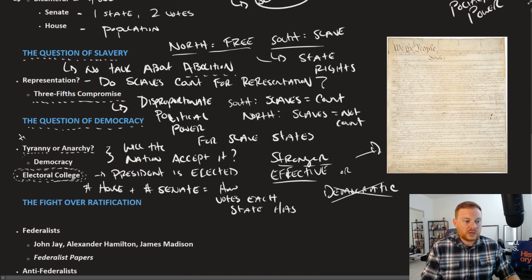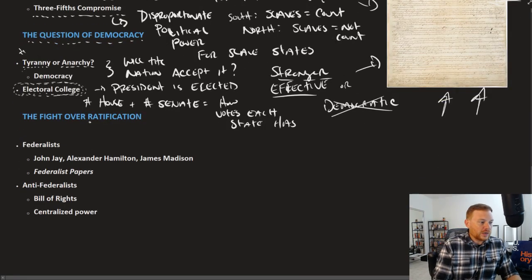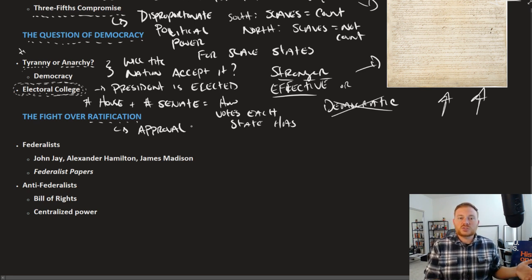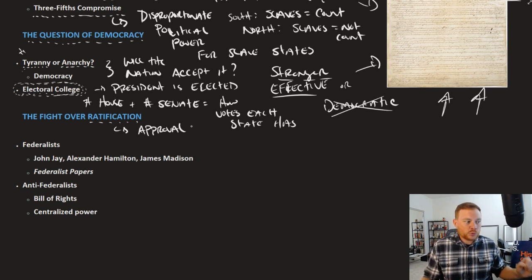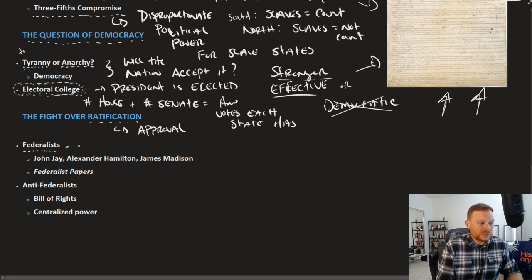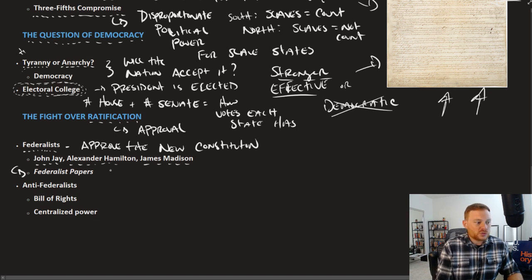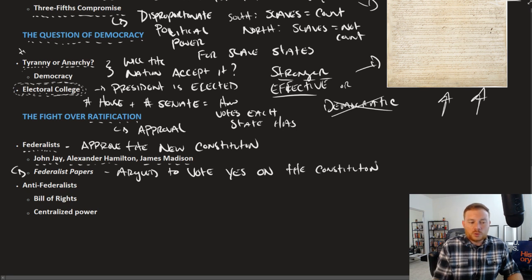When this document was finished — the Constitution, famously beginning with the words 'We the People' to reflect the source of authority — there was a question about ratification, essentially the approval process. They determined that nine out of the 13 states had to approve it. Those who approved the new Constitution were called the Federalists. A group of them — John Jay, Alexander Hamilton, and James Madison — wrote the Federalist Papers, arguing to vote yes on the new Constitution.